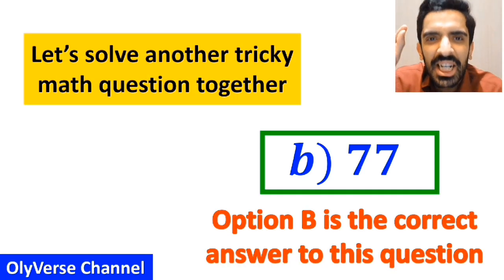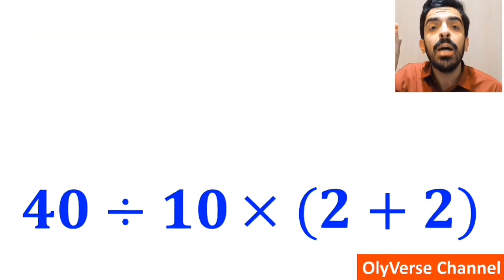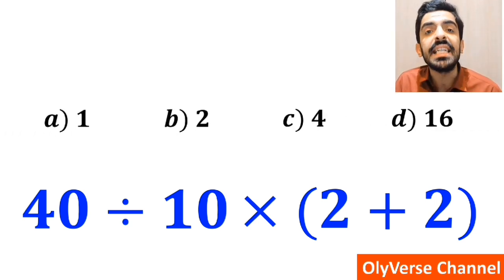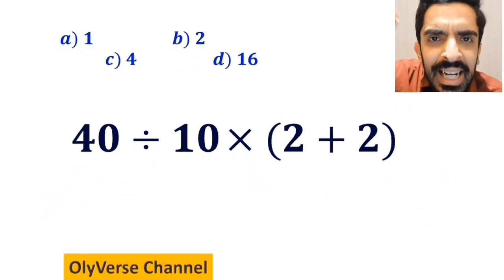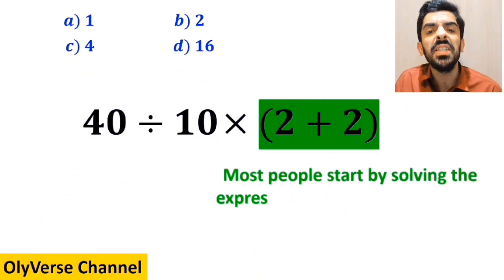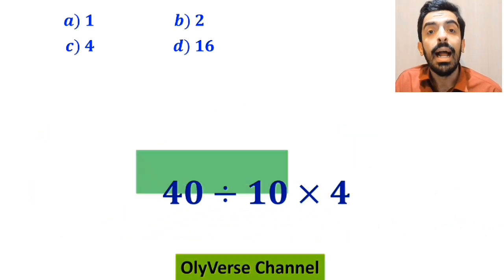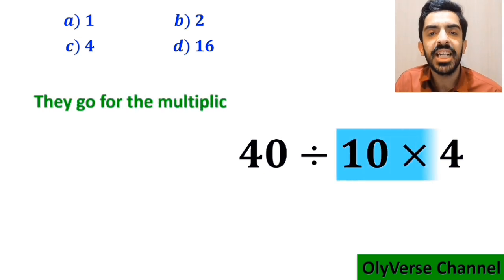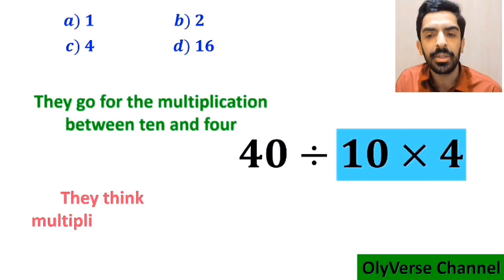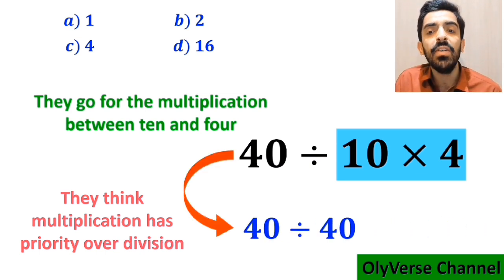Let's solve another tricky math question together. What is the value of the expression 40 divided by 10 times open parenthesis 2 plus 2 close parenthesis? Most people start by solving the expression inside the parentheses and replacing it with 40 divided by 10 multiplied by 4. In the next step they go for the multiplication between 10 and 4 because they think multiplication has priority over division, simplifying to 40 divided by 40, which gives them the answer 1.